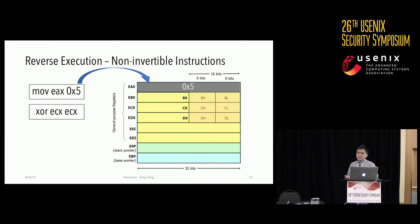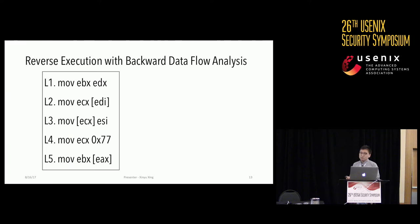For some other instructions, a direct inverse operation is nearly impossible. For example, MOV EAX 5 will override register EAX, and we are not able to restore this value by simply inverting the operation as we did with arithmetic instructions. So in this work, we use backward data flow analysis to deal with non-invertible instructions like MOV or XOR.